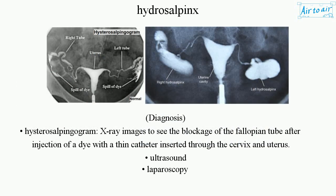Diagnosis: Hysterosalpingogram — X-ray images to see the blockage of the fallopian tube after injection of a dye with a thin catheter inserted through the cervix and uterus. Ultrasound. Laparoscopy.